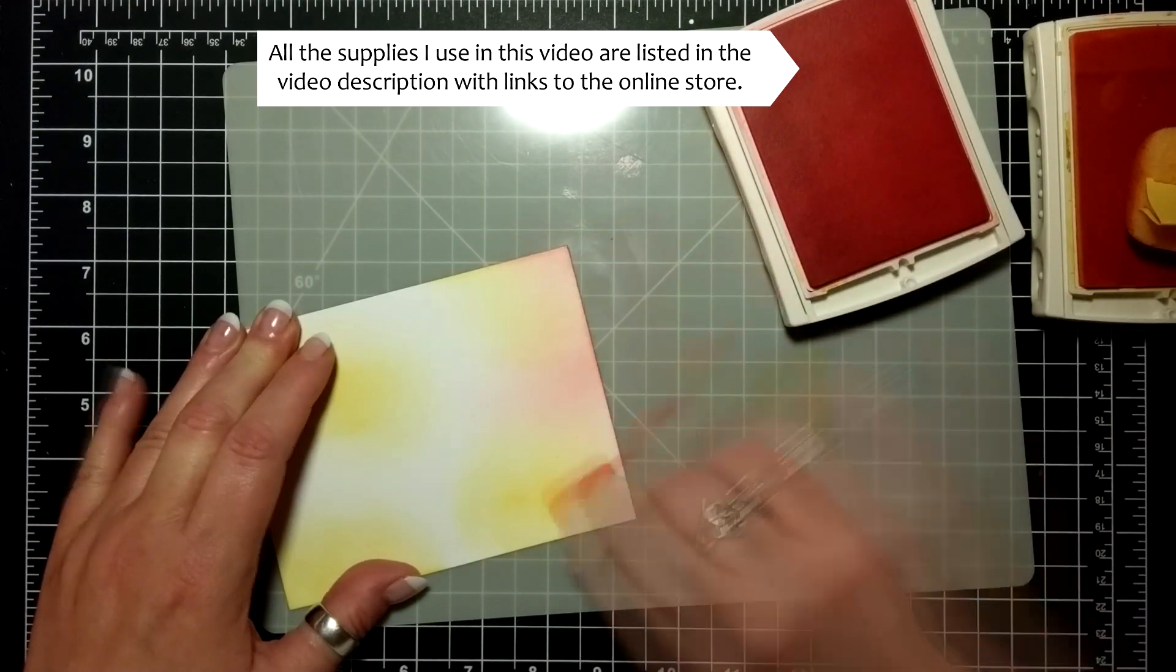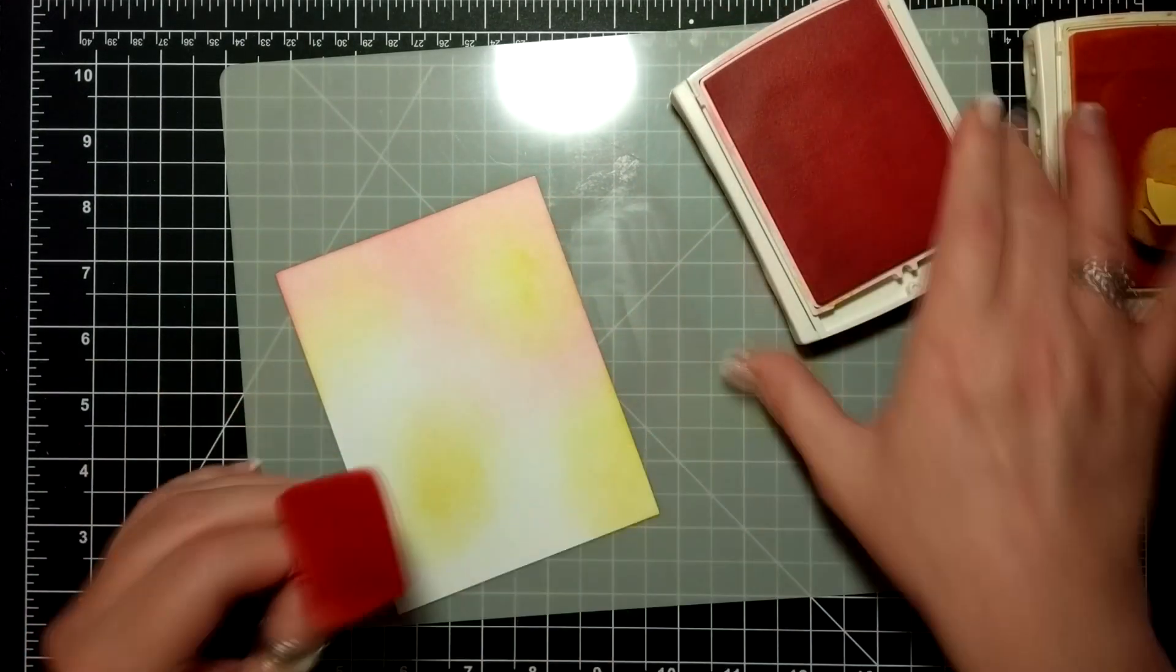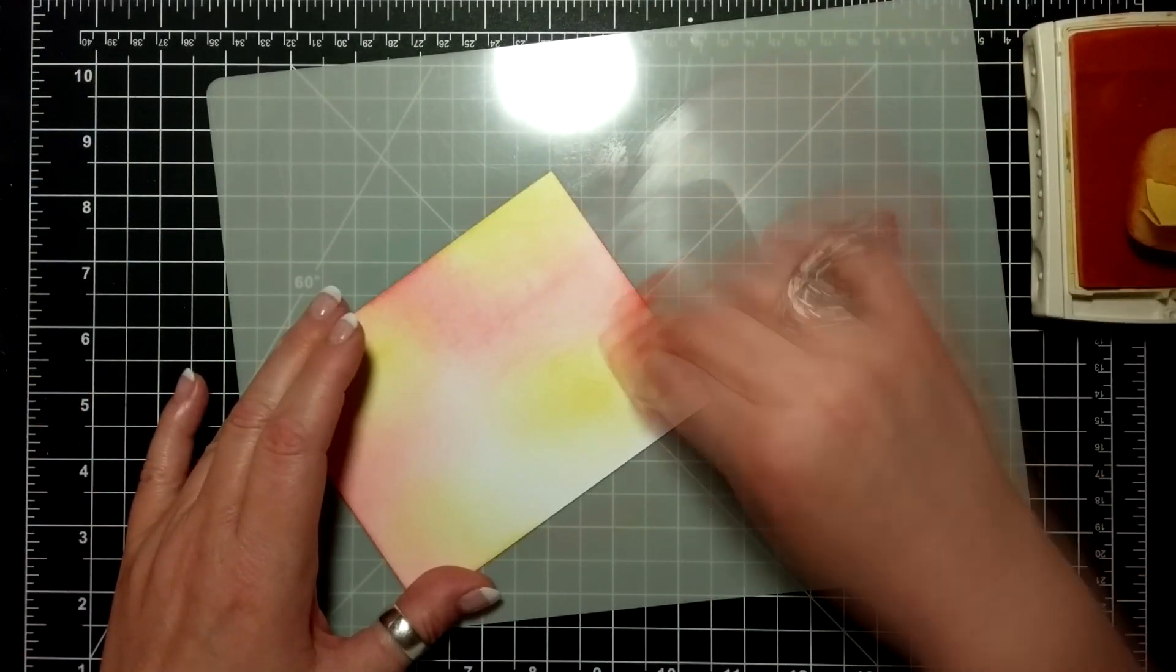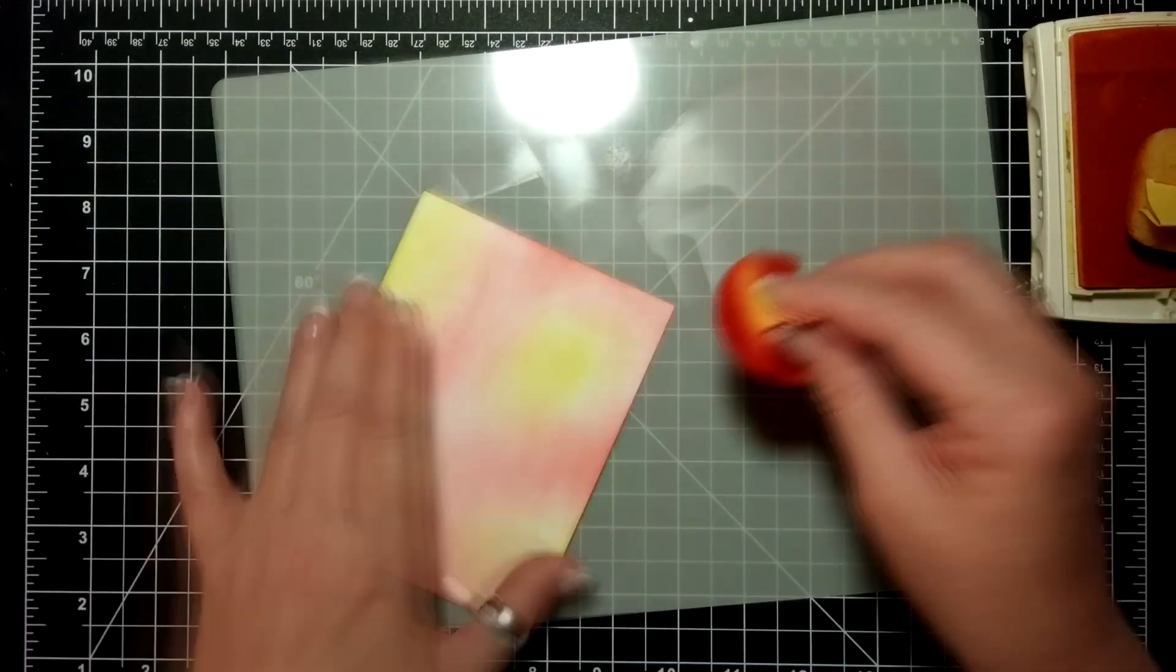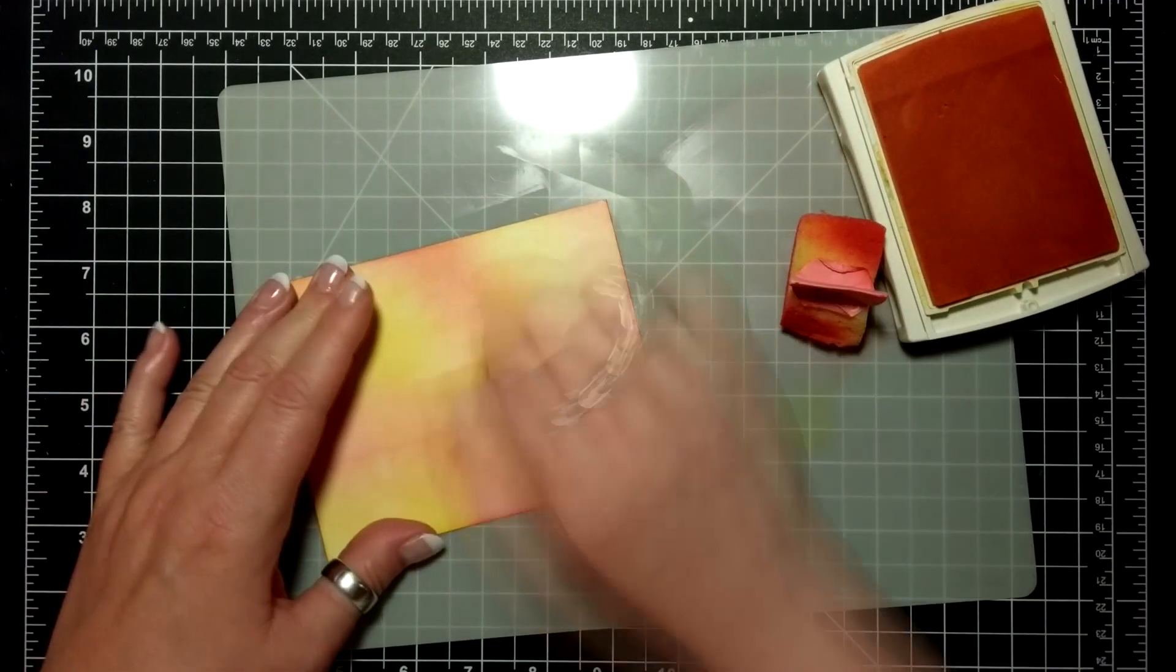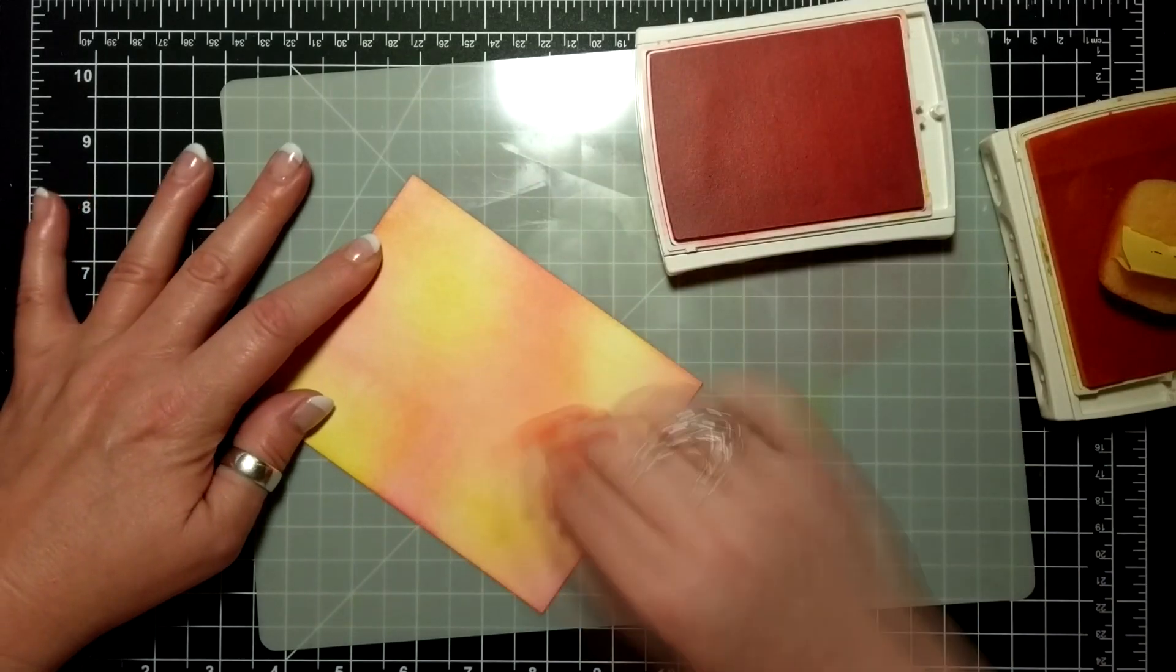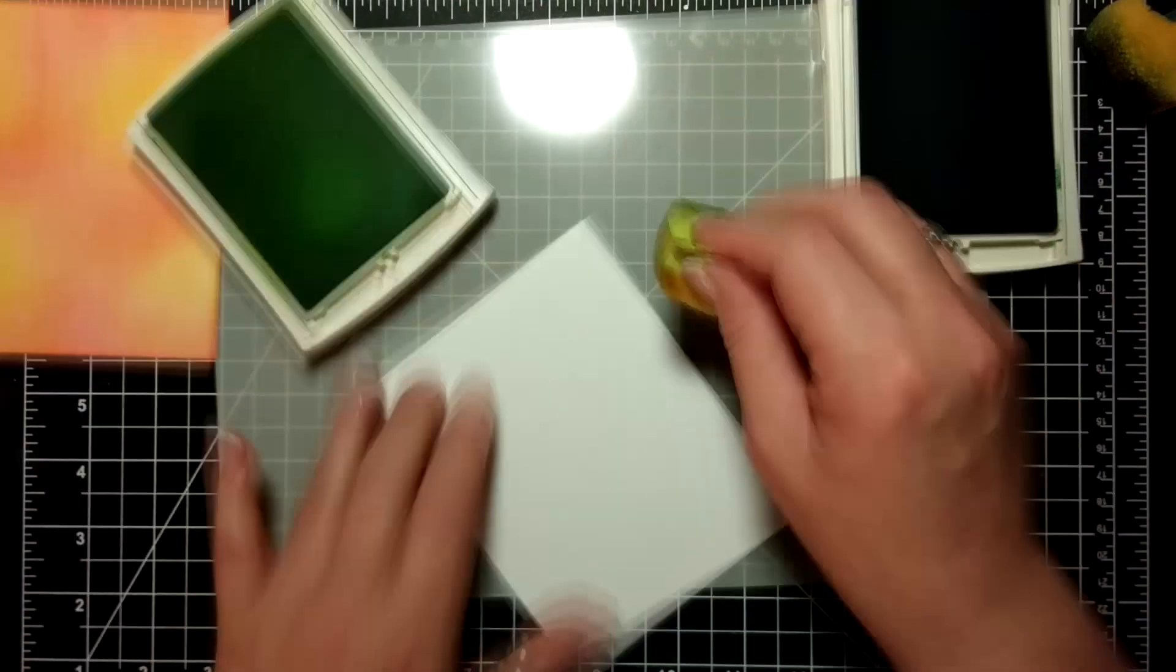I have a piece of Whisper White here and I am sponging on Daffodil Delight and Flirty Flamingo. I have sped this up quite a bit because I want you to see the whole process. This is how I do it—just randomly sponging on yellow and sort of a pinky red, blending to make some parts orange, some parts yellow.